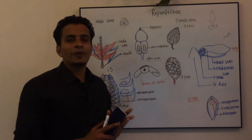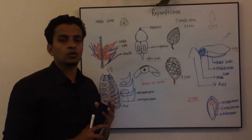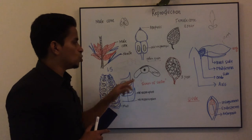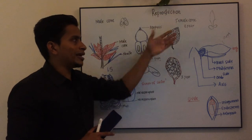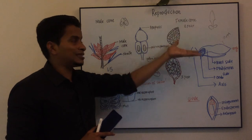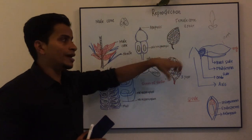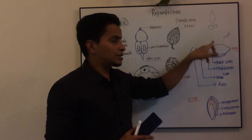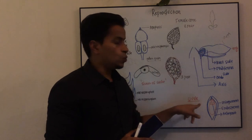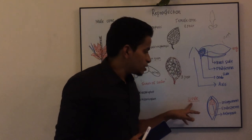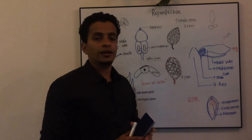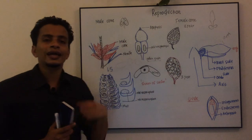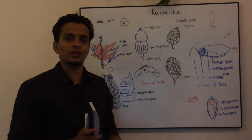Now we will discuss the female cone with the male cone together. The male cone and female cone structures differ in their developmental stages — first year, second year, and third year. We can also see a longitudinal section of the ovule structure. The development of the male gametophyte and female gametophyte will be discussed in the next class.